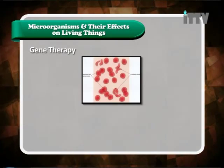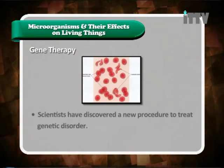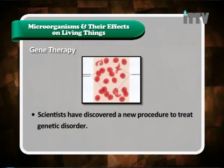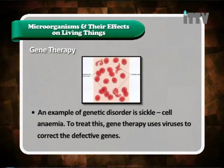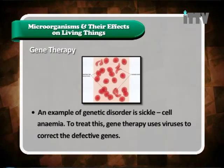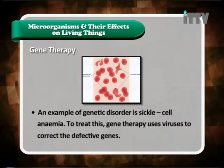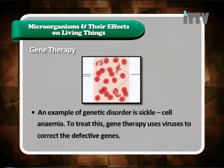Potential use of microorganisms in gene therapy: scientists have discovered a new procedure to treat genetic disorders. An example of a genetic disorder is sickle cell anemia. To treat this, gene therapy uses viruses to correct the defective genes. Virus actually helps in gene therapy.